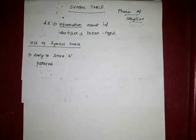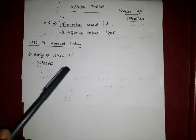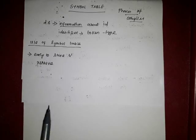So why do we use the symbol table? The use of the symbol table is to easily store and retrieve information. When the lexical analysis identifies an identifier, the identifier's information needs to be stored somewhere — and that is stored in the symbol table.